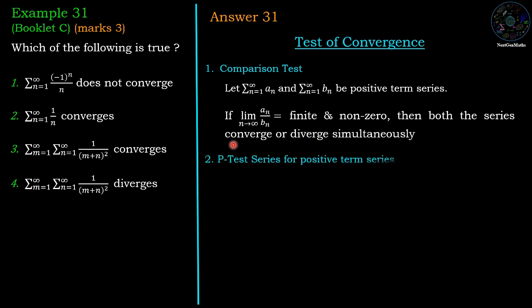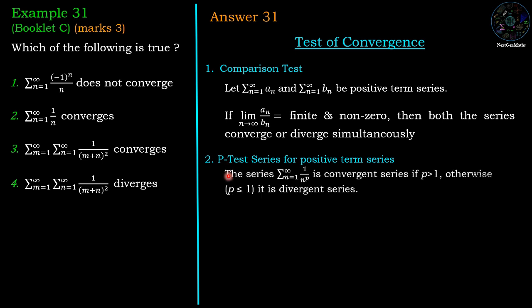Second test: the P-series test. For the positive term series sigma n=1 to infinity of 1/n^p, the series is convergent if p > 1; otherwise, that means p ≤ 1, it is a divergent series.